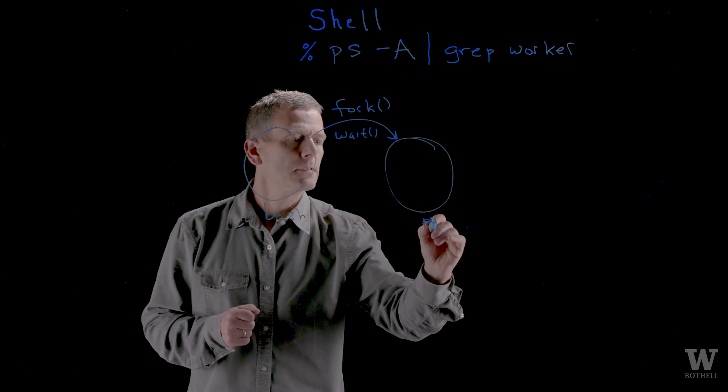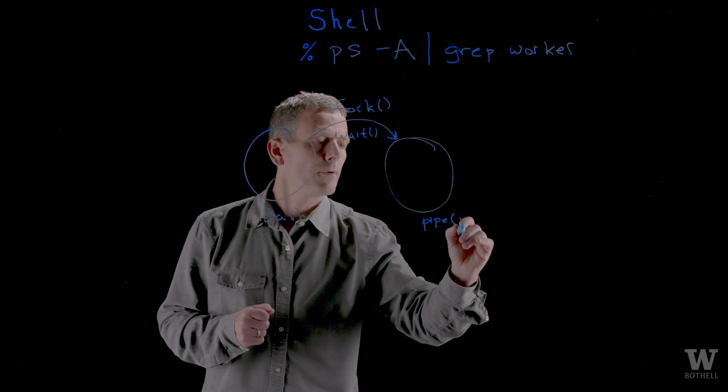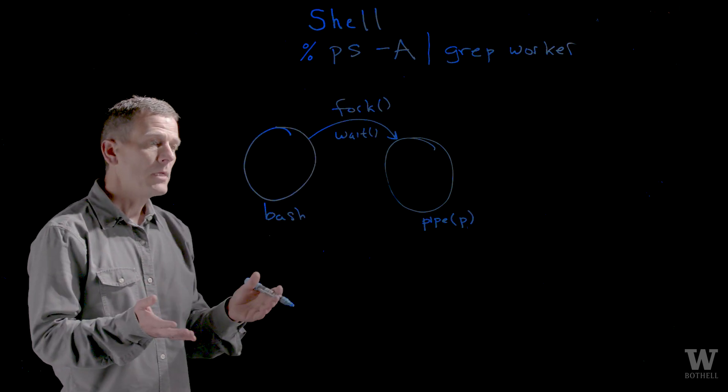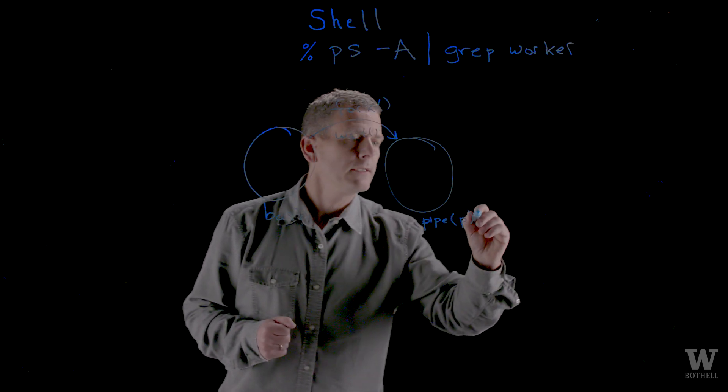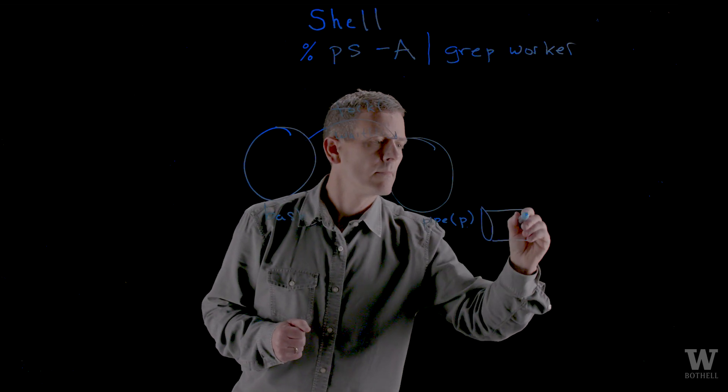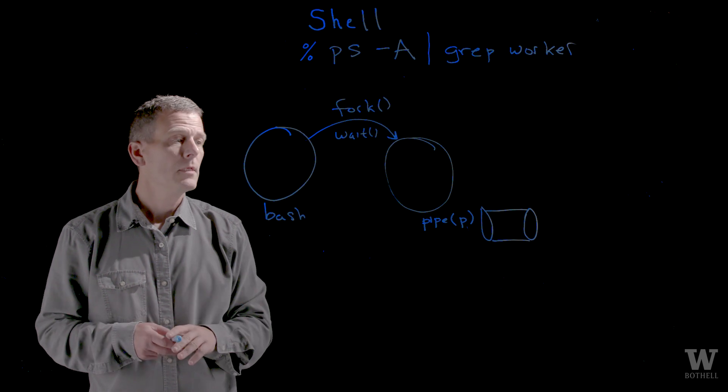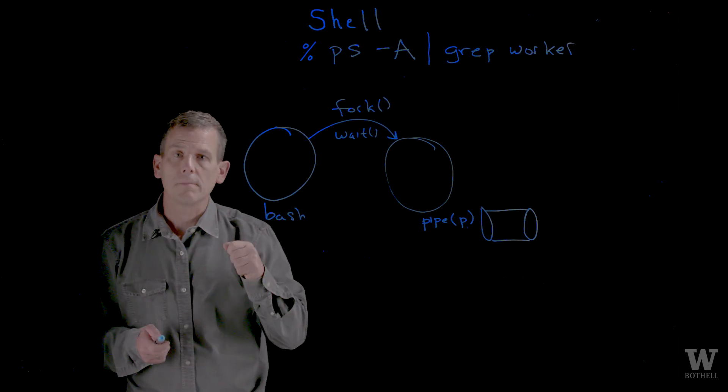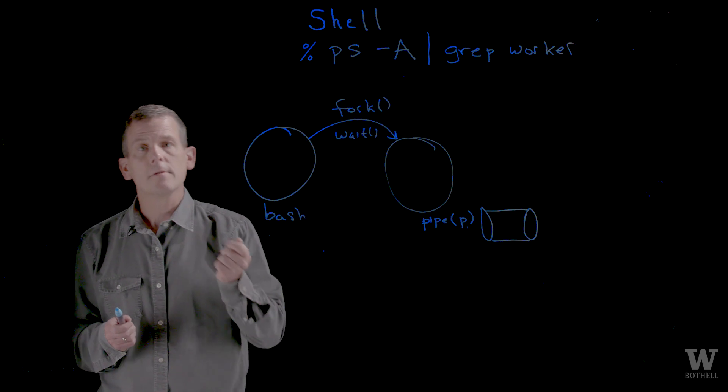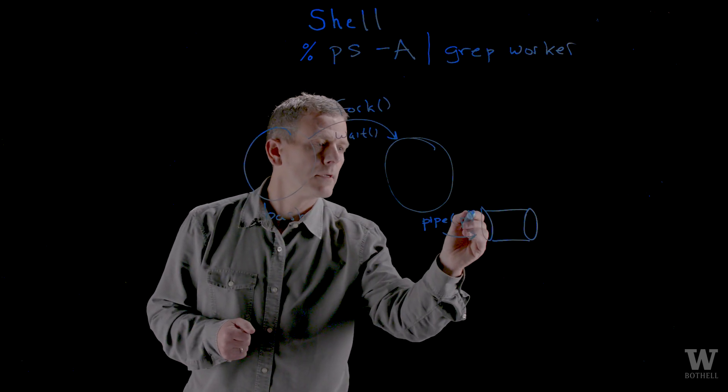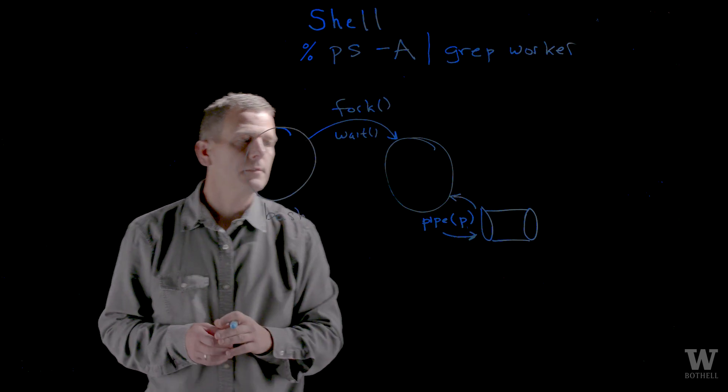So here I will write the system call done by that process and we'll call it pipe P. P comes back as the pipe. Let's draw that. And the pipe is exactly what it sounds like. It's a pipe where I can put data in and read data from. And so there's a read side and there's a write side to the pipe. I'll draw it with two arrows, a read side and a write side to the pipe.